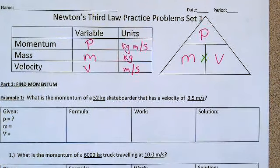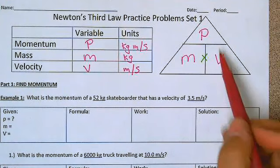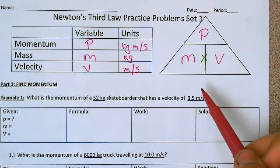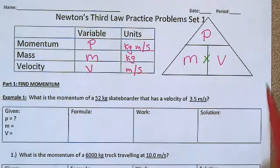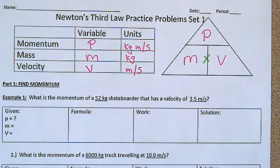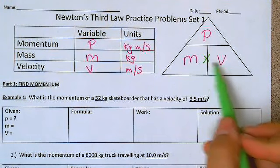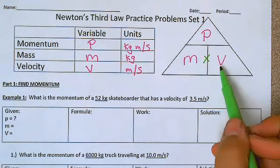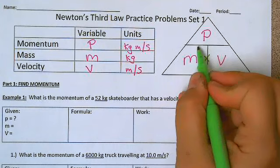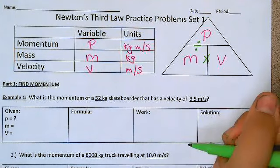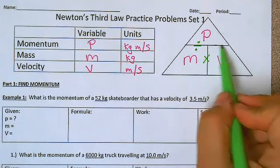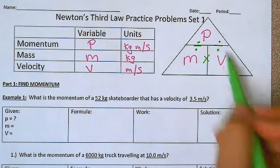Let's look at our math triangle. The P for momentum is going to go in the top, and the mass and the velocity are going to go in the bottom. So we have: momentum is mass times velocity. If we're looking for velocity it's going to be momentum divided by mass, and if we're looking for mass it's going to be momentum divided by velocity.